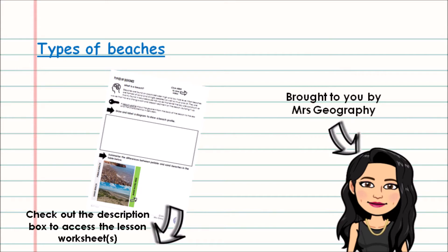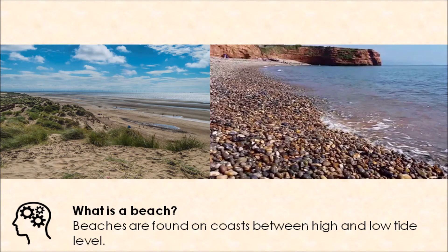Let's start by thinking about what a beach is. A beach is a landform of coastal deposition — the dropping off of material — that lies between high tide and low tide. Beaches are found on coasts between high and low tide lines, and most are formed of sand or shingle. Some people refer to shingle as pebbles, and if not formed of sand or shingle, beaches are usually made up of mud and silt — very fine particles and sediment.